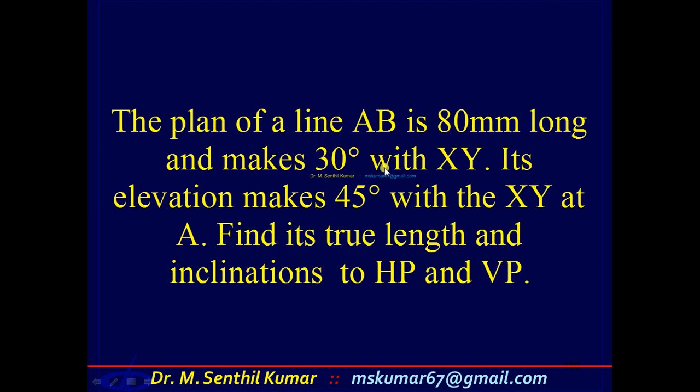You see how many data you are given with? 80 number one, 30 number two, 45 number three. You are given only with three data. But actually I said to solve a problem for a line inclined to both the planes, you should have five data. But you are given with three data only. That means I have to assume two data.